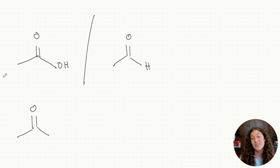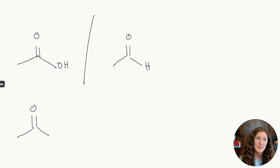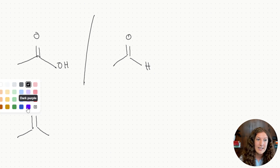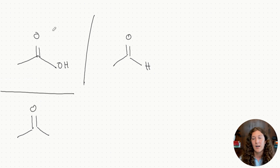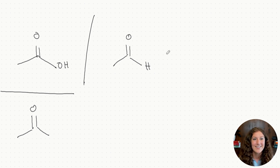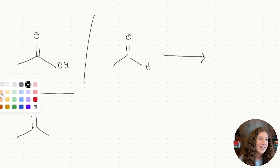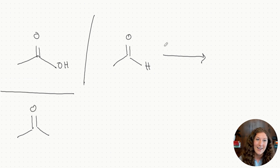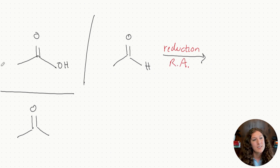Let's do reduction. The reduction of organic molecules is really just the reverse of our oxidation reactions. We're starting with either a carboxylic acid, an aldehyde, or a ketone, and resulting in either primary alcohols or secondary alcohols. If we reduce either a carboxylic acid or an aldehyde by adding a reducing agent, both of those reduction reactions are going to produce primary alcohols — we're going to get back to our ethanol.